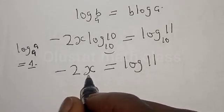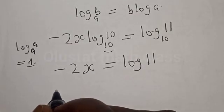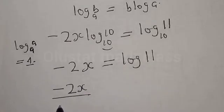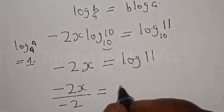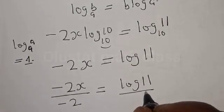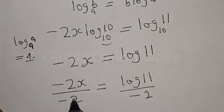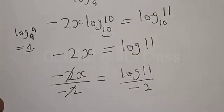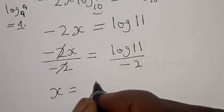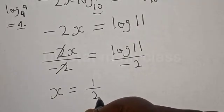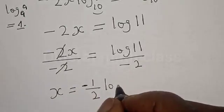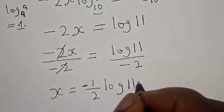Now let's divide both sides by minus 2. We have minus 2s divided by minus 2 is equal to log 11 divided by minus 2. This cancels, and we have s is now equal to minus 1 divided by 2 times log 11.